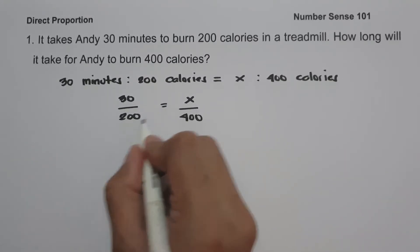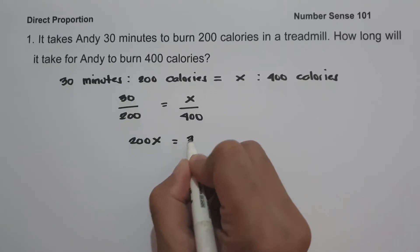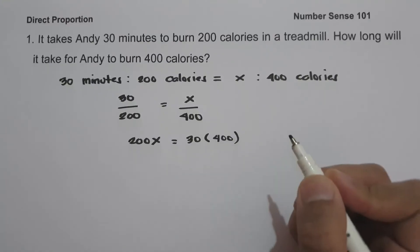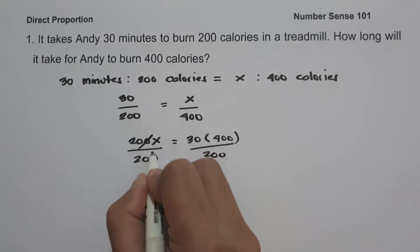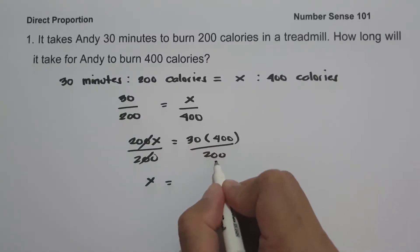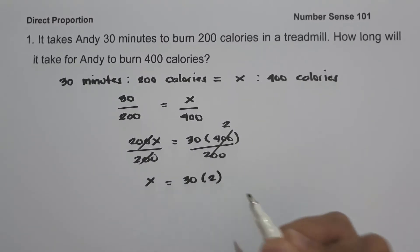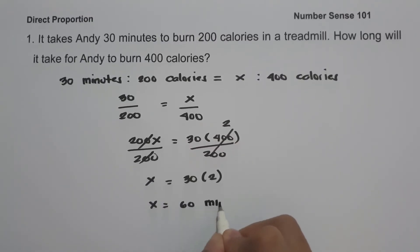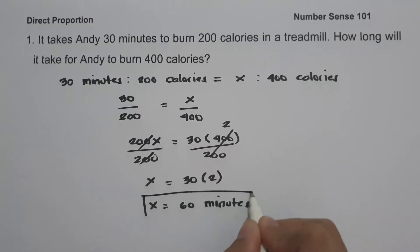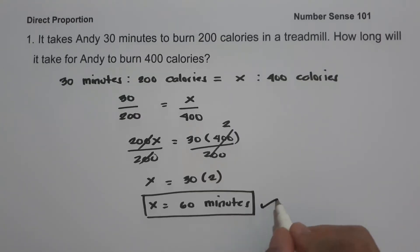Then 200 multiplied by X, that is 200X, and let us have 30 multiplied by 400. Let us divide both sides by 200. Let us cancel this one. 400 divided by 200, that is 2. So we are going to have 30 multiplied by 2. So X is 30 times 2 and that is 60 minutes. Therefore, it will take 60 minutes for Andy to burn 400 calories, and this will be our answer.